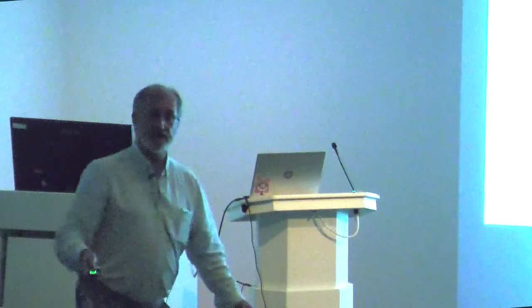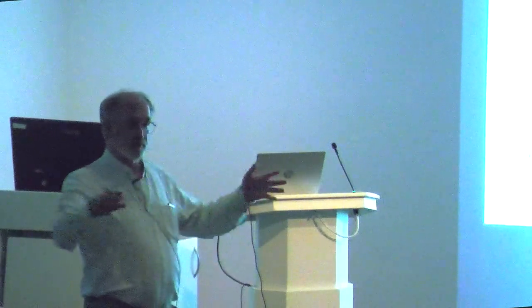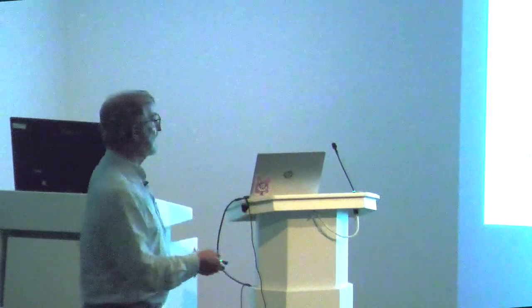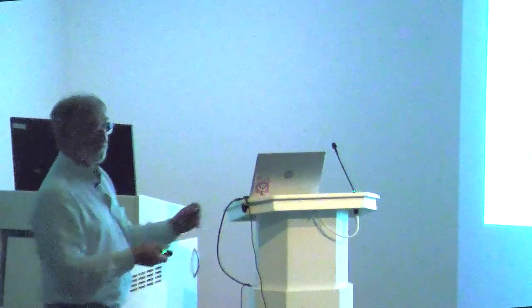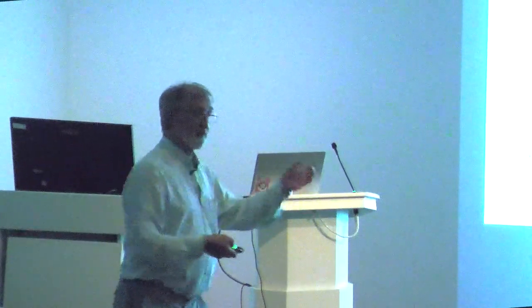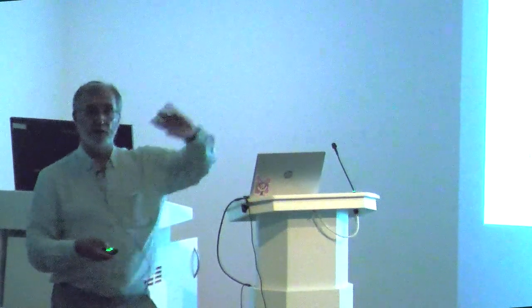We can do exactly the same thing with the tail spectrum. Starting with an average spectrum across the width of the tail, we subtract the dust in the same way and get the tail emission spectrum. You can see CN, the sodium D line, and we can now determine what those interesting sets of double lines are — these are actually from CO+. It's CO+ in the blue which gives the ion tail its blue colour.